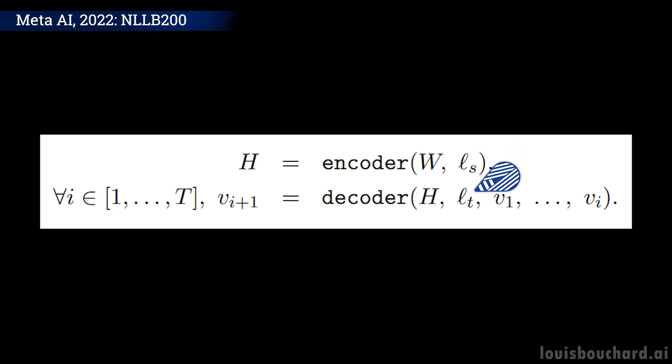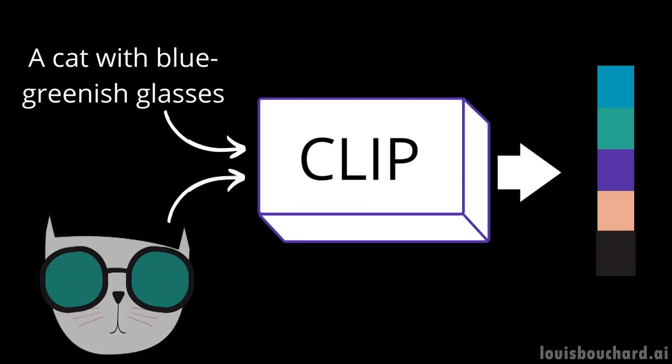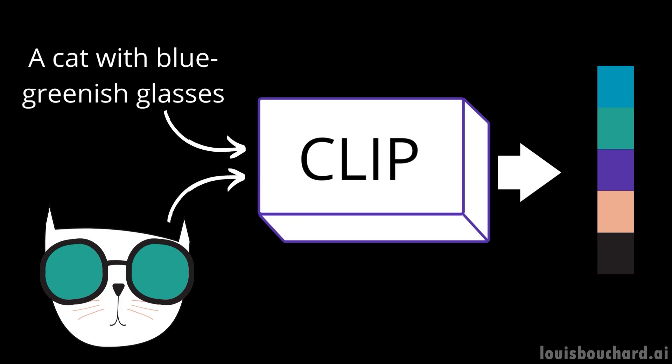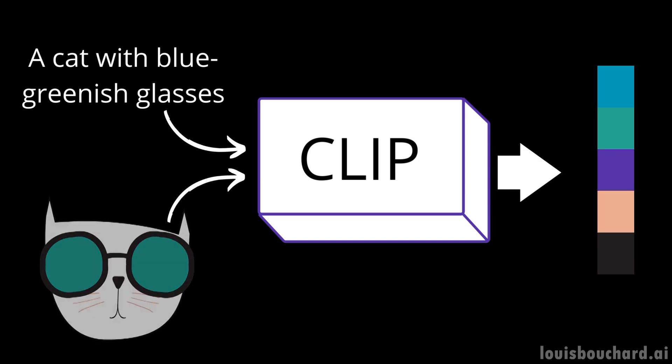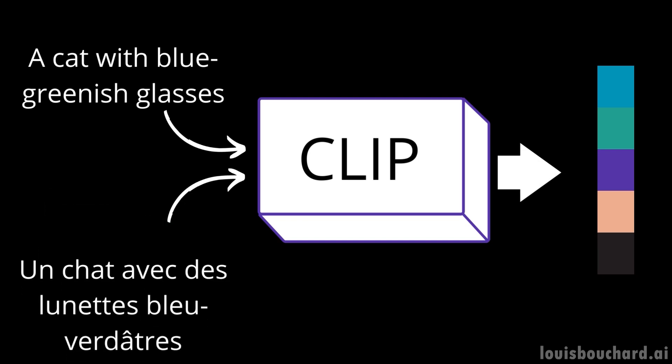Then, we do the same thing with the decoder, giving it which language to translate to. Note that this conditioned encoding scheme is very similar to CLIP, which encodes images and text similarly. Here, in ideal conditions, it will encode a sentence similarly whatever the language.